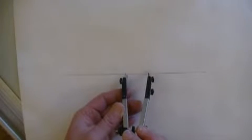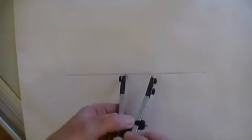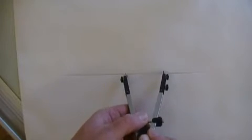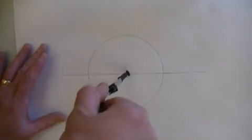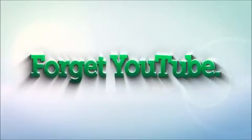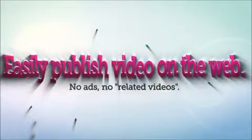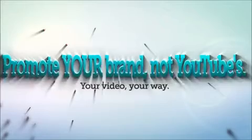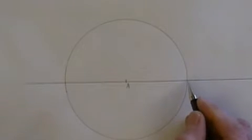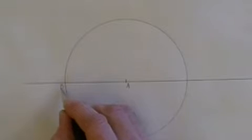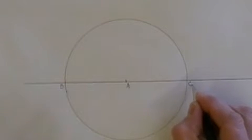Take your compass and set it to the radius that you desire your circle to be. Where our original line intersects the circle, let's label those points as point B and point C.